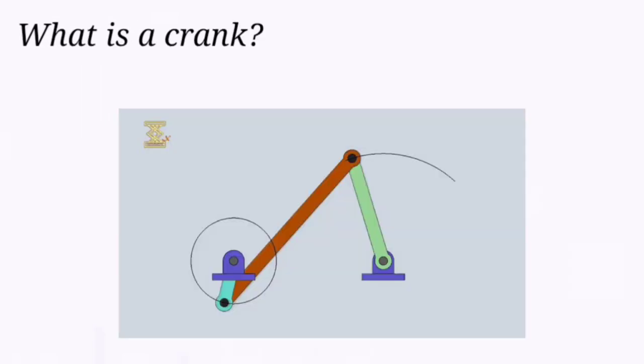What is a crank? A crank is a link that undergoes complete revolution. What is a rocker? A rocker is a link that does not undergo complete revolution.